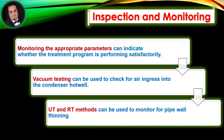Inspection and monitoring. Monitoring the appropriate parameters can indicate whether the treatment program is performing satisfactorily. Vacuum testing can be used to check for air ingress into the condenser, as well as UT and RT methods, which can be used to monitor for pipe wall thinning.